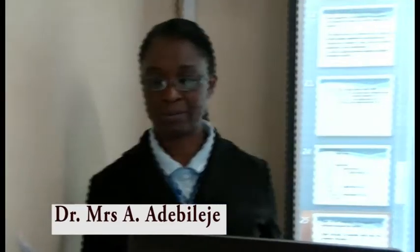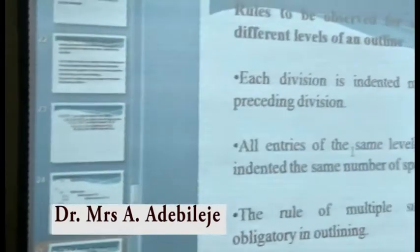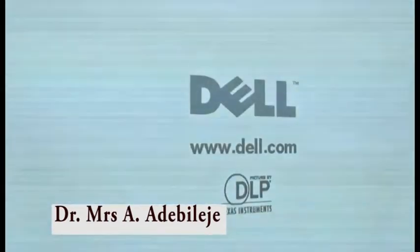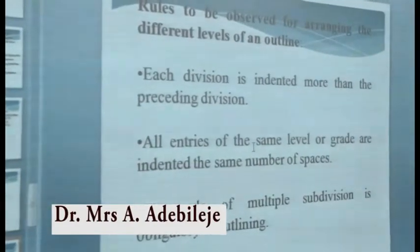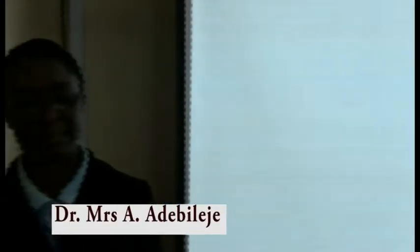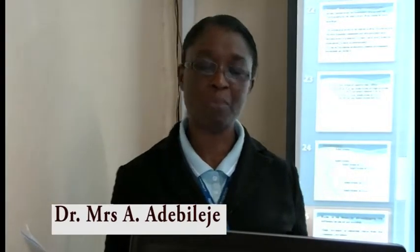Note, however, that there are some rules to be observed for arranging the different levels of an outline. For instance, each division is indented more than the preceding division. Note that number 1, which is the major division, has a little indentation before the subdivisions, which go in more than the preceding level. Also, note that all entries of the same level or grade are indented the same number of spaces.